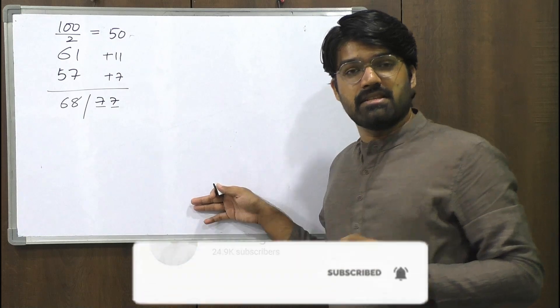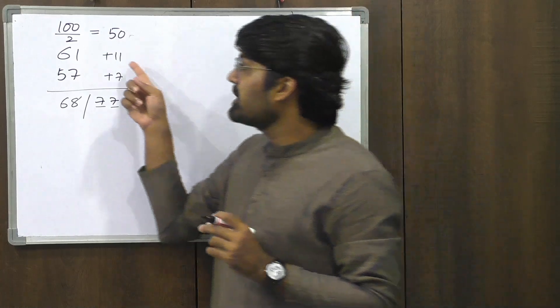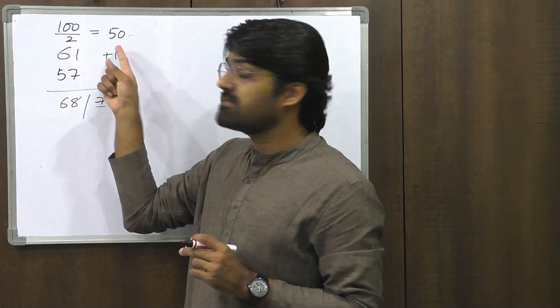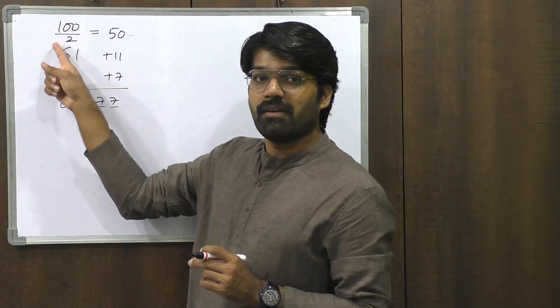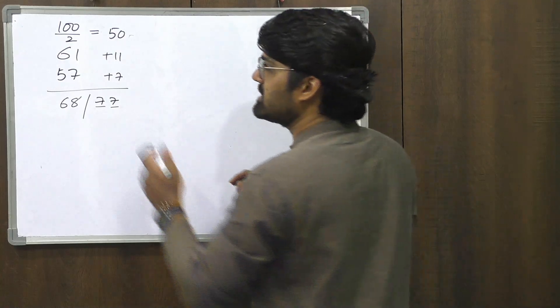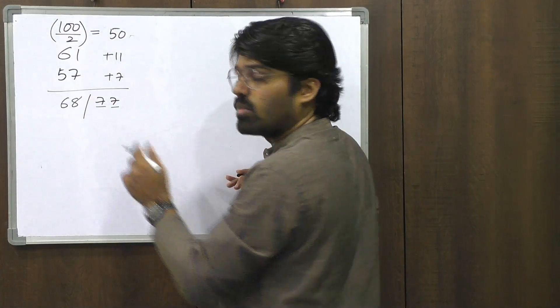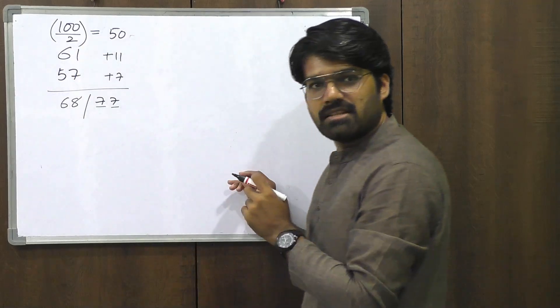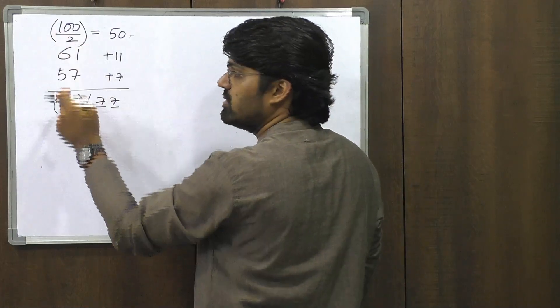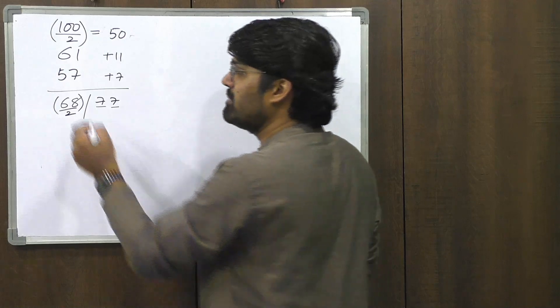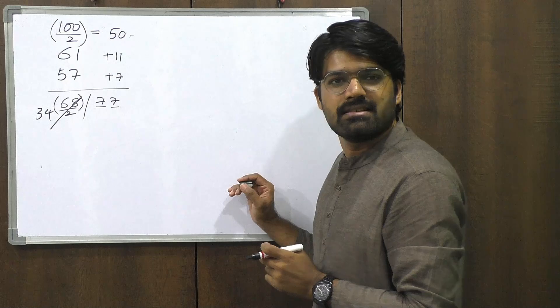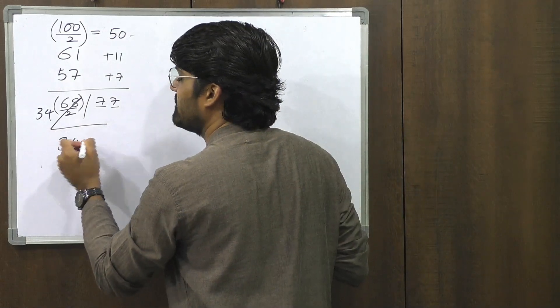So does it mean the answer is 6877? Well, no. It is not. Remember the plus 11 and plus 7 here was in comparison to 50. The working base was considered 50. How did we get this 50? From the actual base 100 when divided by 2 gave us 50. So you need to do an additional step here. And that additional step is whatever proportionality has been applied here, you have to do it in the same proportion to the first part of the answer. So 100 was divided by 2. You divide 68 by 2. What is 68 by 2? 34. So your first part of the answer is 34 and second part of the answer is 77. So the final answer here will be 3477.